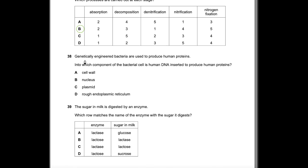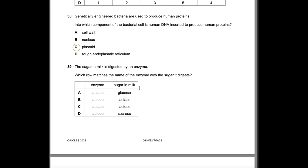Question 38: Genetically engineered bacteria are used to produce human proteins. Into which component of the bacterial cell is the human DNA inserted? The answer is the plasmid. The human DNA is cut with a restriction enzyme and inserted into the plasmid using a ligase enzyme. The bacteria are then placed into a fermenter to produce large amounts of the engineered substance.